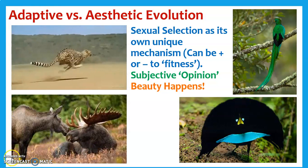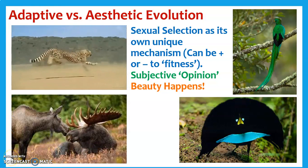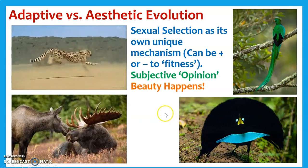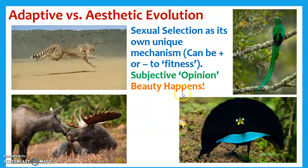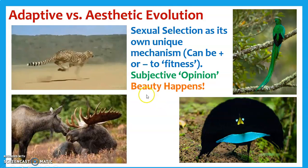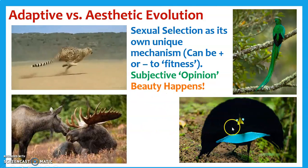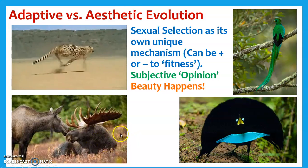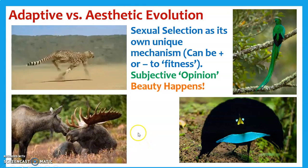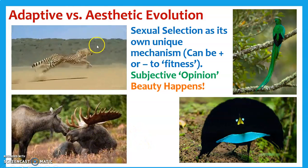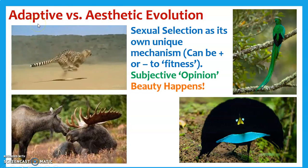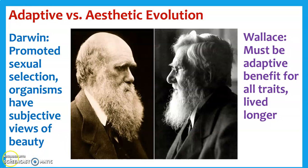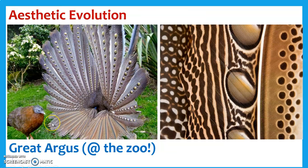We've really started going back and looking at Darwin's ideas to change things around — this idea that organisms have their own subjective opinion or idea of what beauty is. There's a really cool book called 'Beauty Happens' — that organisms have their own idea of beauty that isn't always in line with what we think of as adaptive selection. So let's look at some more examples.